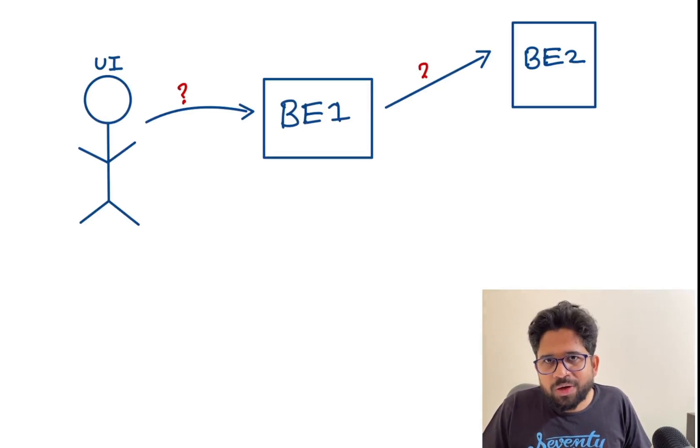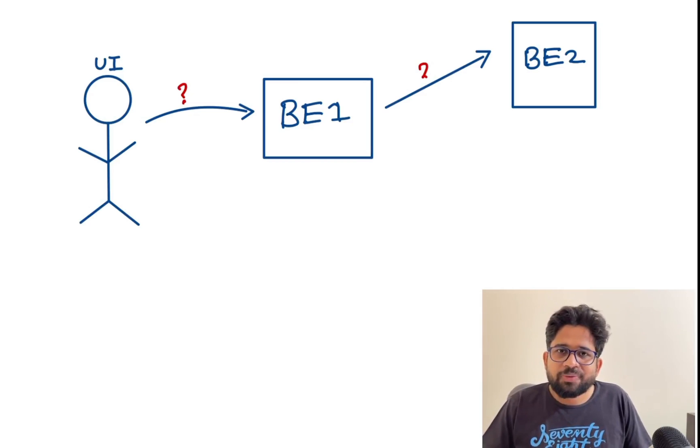What are the bare minimum network protocols which one should know while designing a system? This comes in very handy when you're thrown a problem statement. For example, can you design a chatting application? Now what will you do? You'll create three boxes: a UI, a backend, and maybe a backend 2 or database.